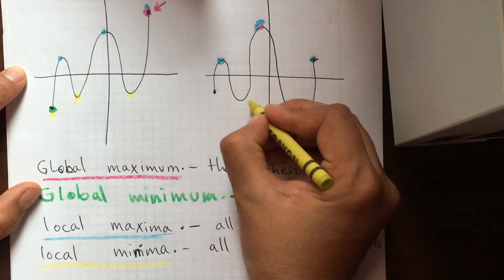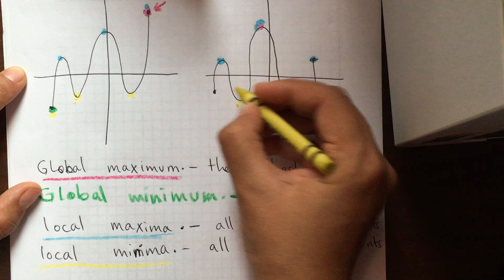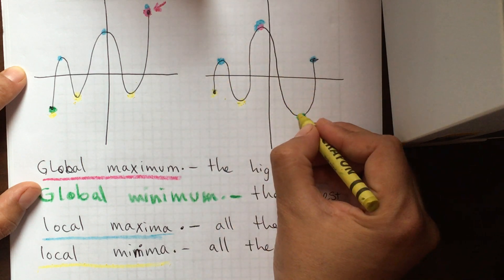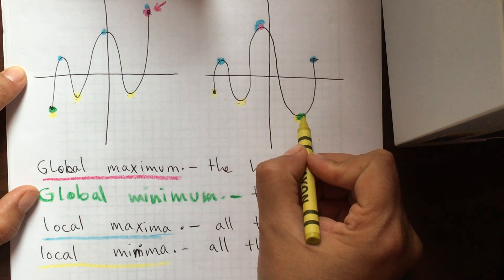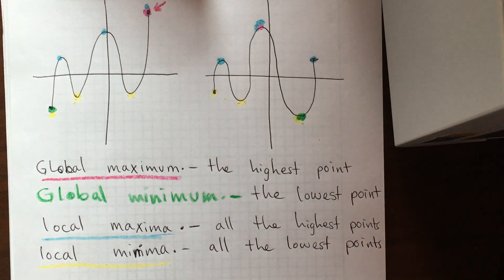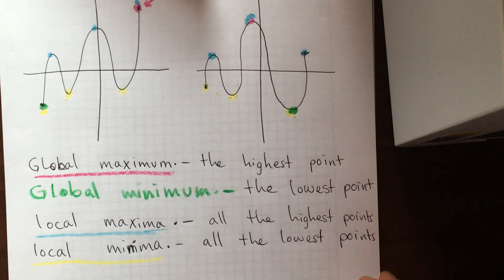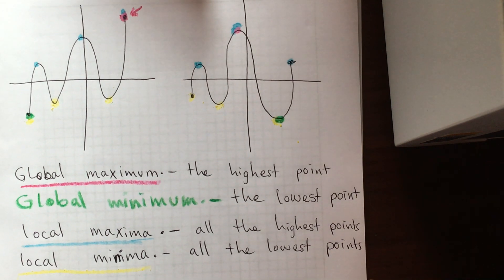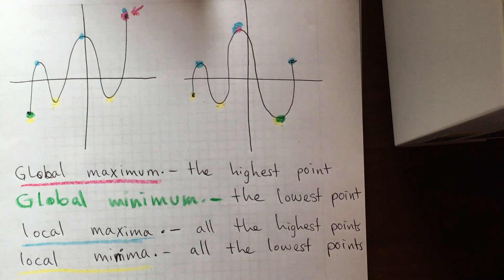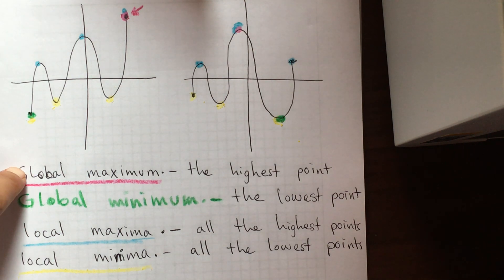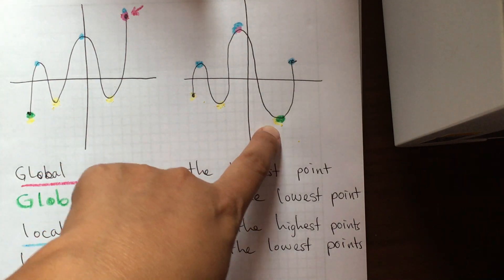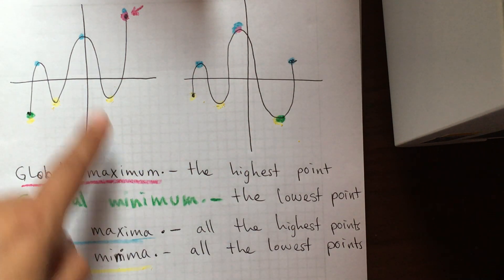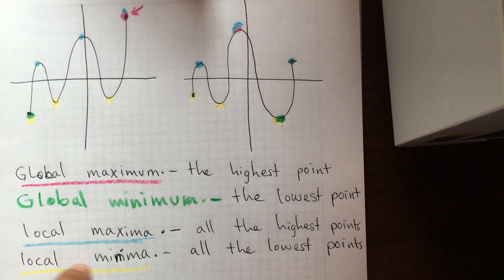In this graph, this is lower than other points, this is lower, and this is also a local minimum — even though this is also the global minimum. So take a minute, pause it and take note. There is only one global maximum (the highest point) and one global minimum (the lowest point), but there are several local maxima and several local minima in each of these two graphs.